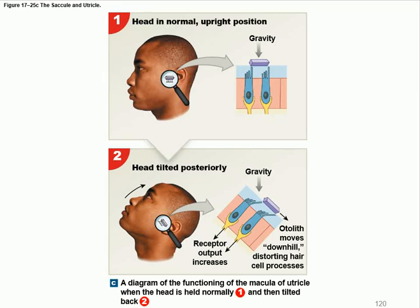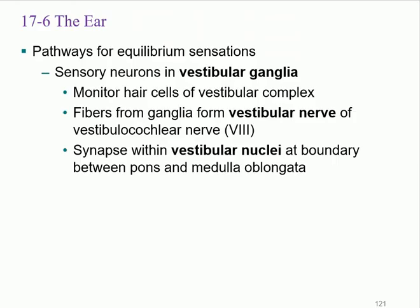This is Part 3 of the special senses, Chapter 17. Last time we talked about how we generate the action potential. The rule of thumb is that everything, in order to travel within the nerve, has to be an electrical signal or action potential. Whether it's light, sound waves, equilibrium, or taste — everything has to be converted into a depolarization or action potential. In the ear specifically, we're talking about the hair cells.